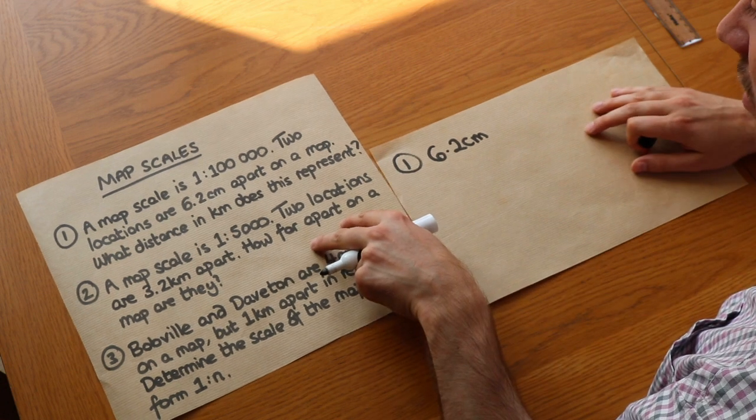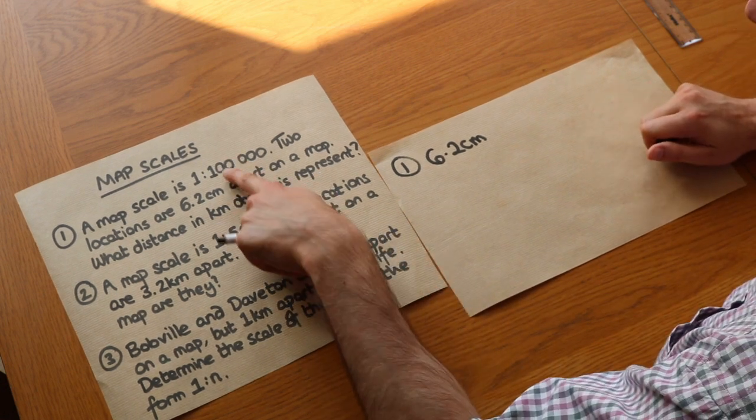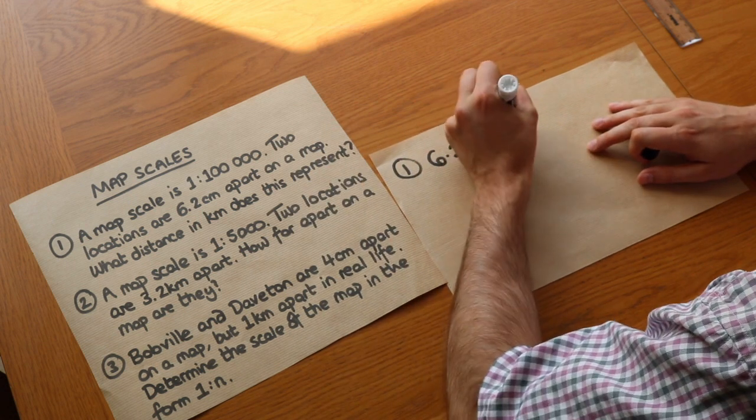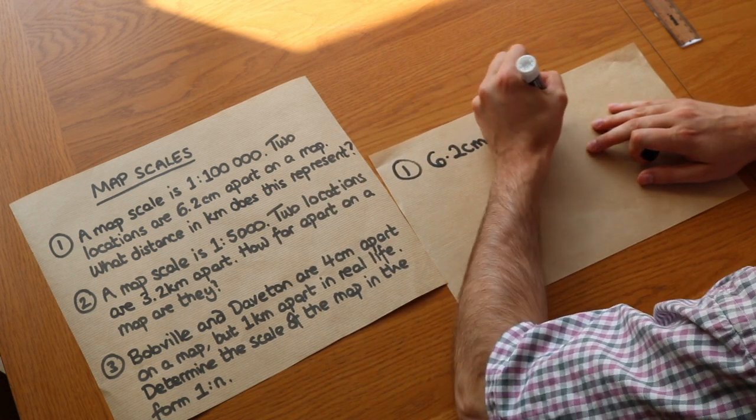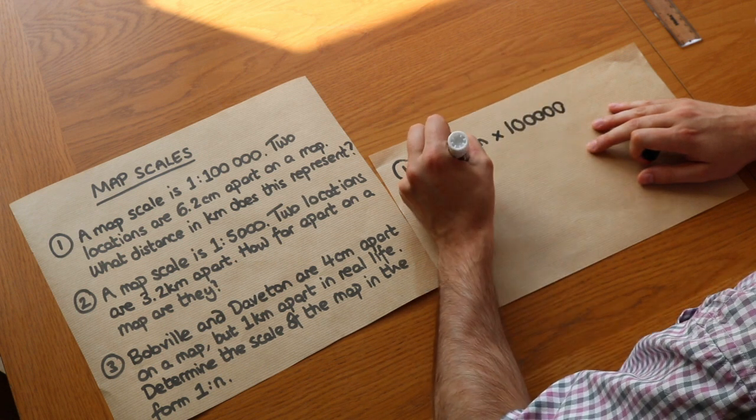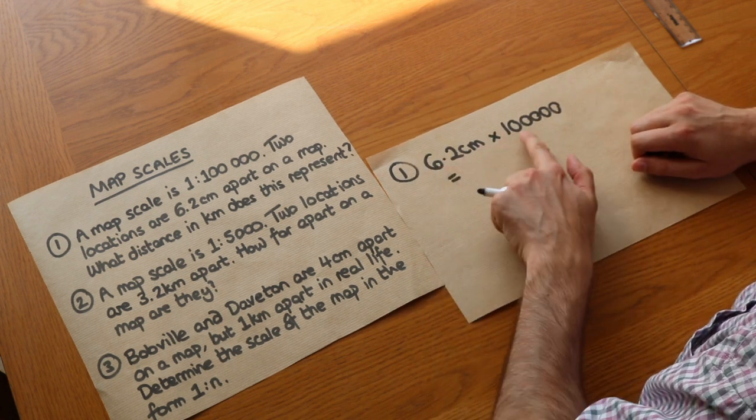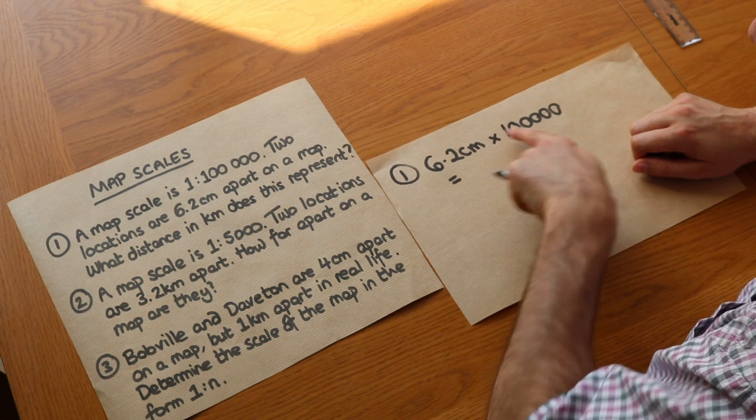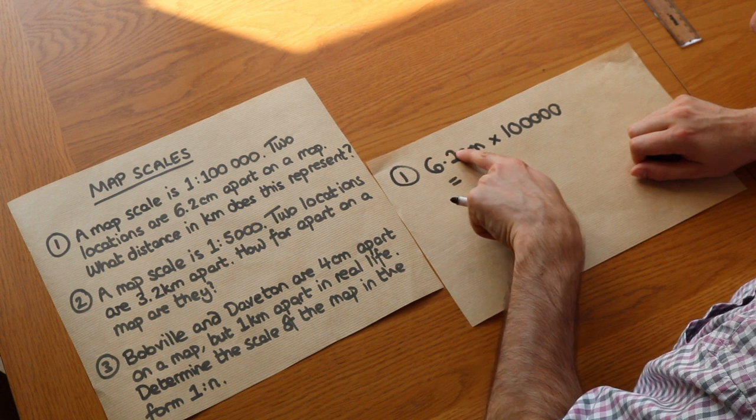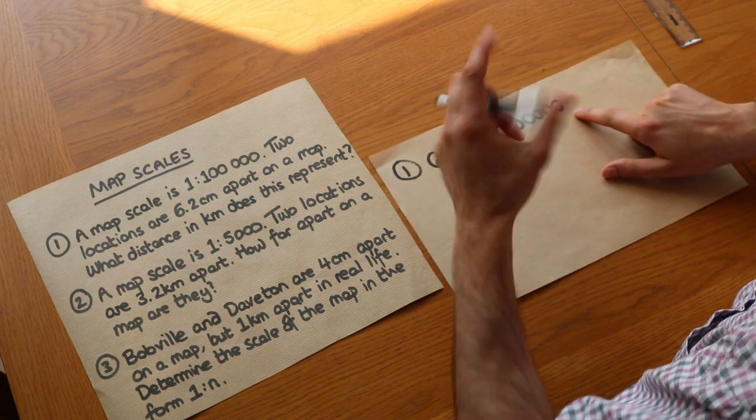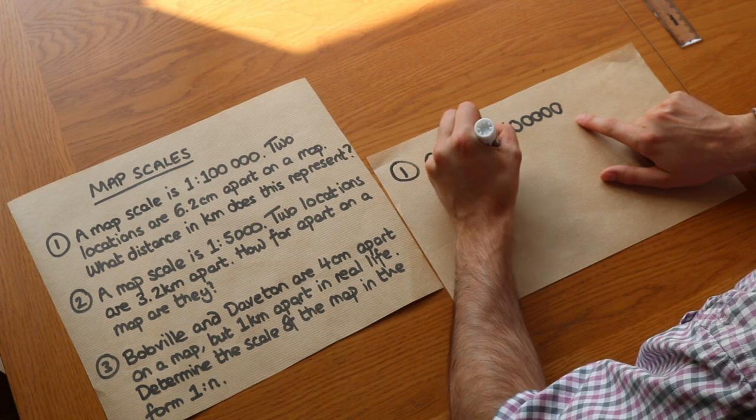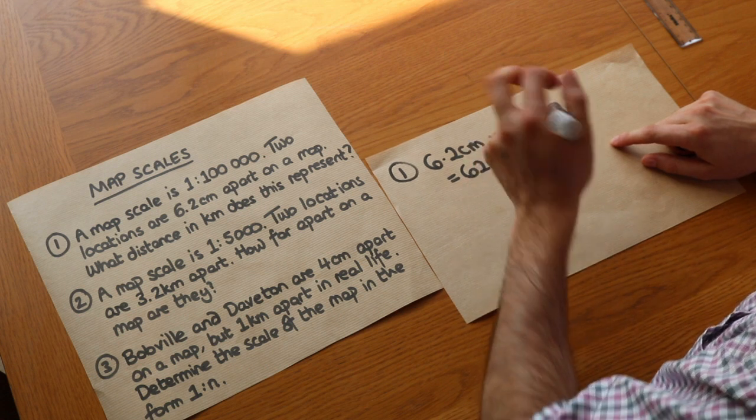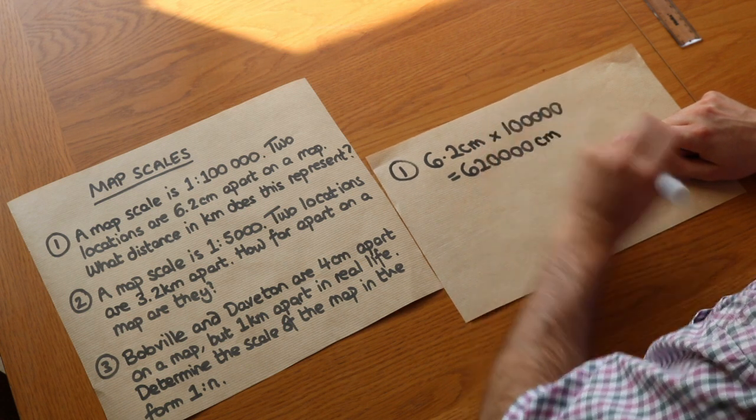Well, we're starting with 6.2 centimeters on the map and I keep the units here so I'm clear at any given point what I'm actually using. We said that real life was a hundred thousand times bigger so we just times by a hundred thousand. Be very careful about preserving units here. If we times 6.2 by a hundred thousand, the first zero is going to move the decimal point by one place, we've got 62, but then we still want to add another four zeros, so it's 62 with four zeros on the end. Remember I said we have to be consistent with units, that centimeters before, it's still centimeters now.